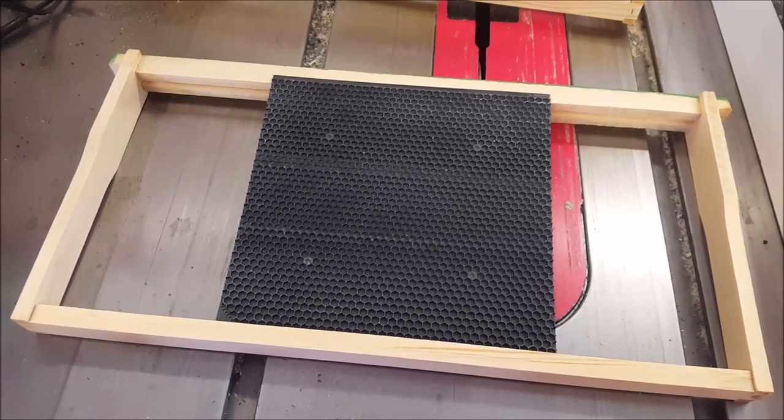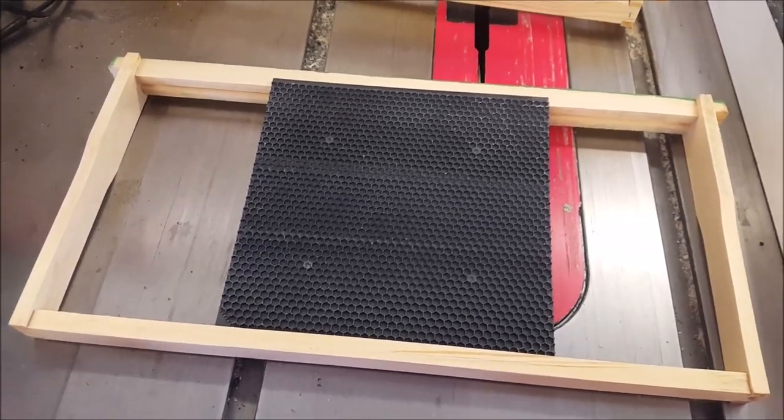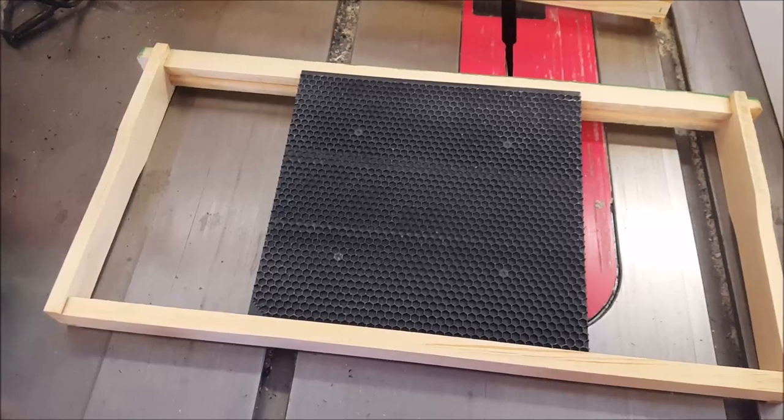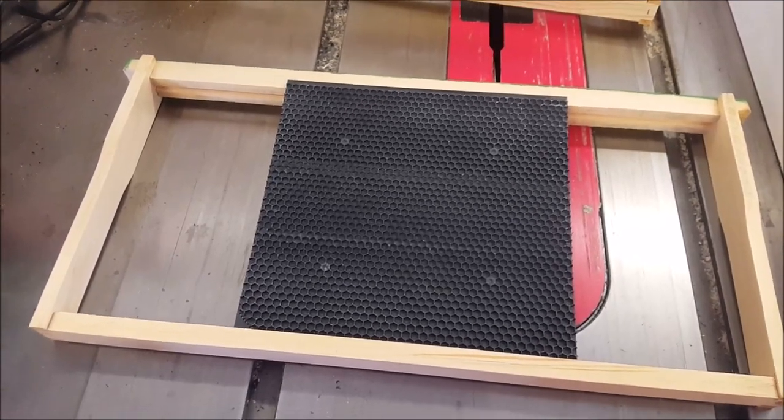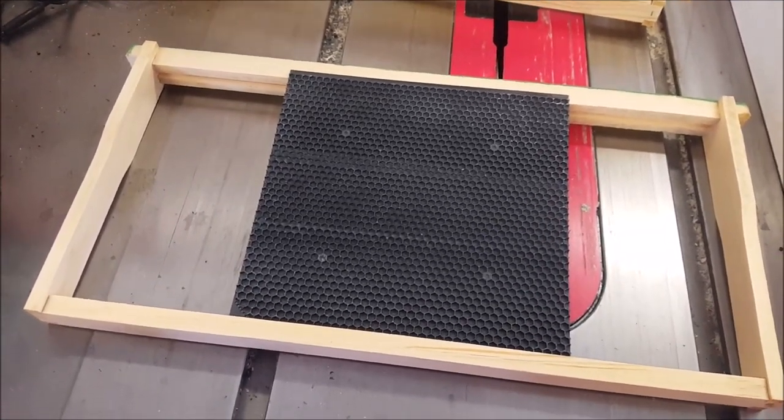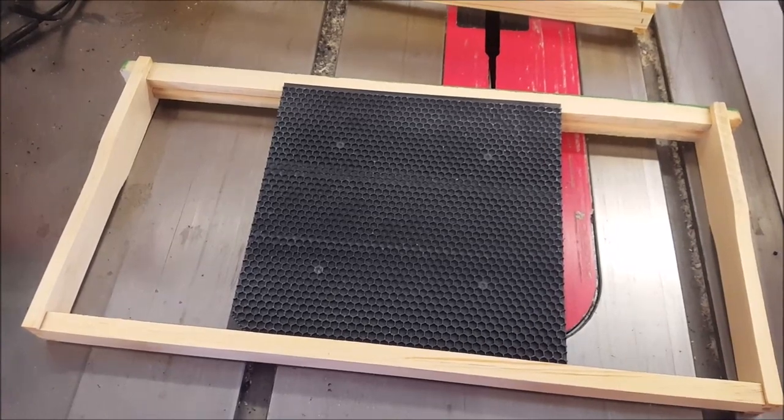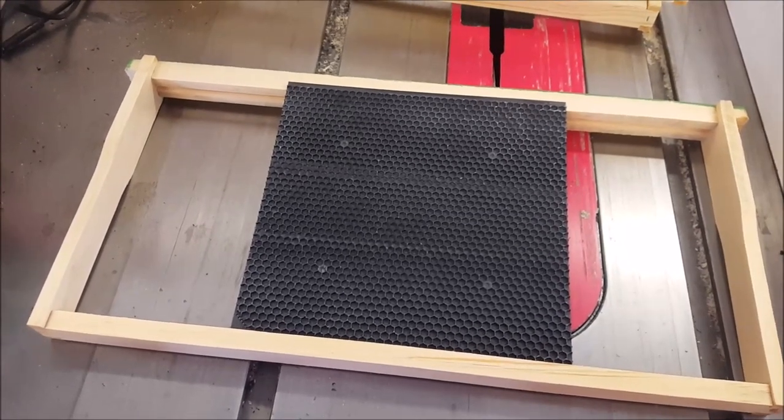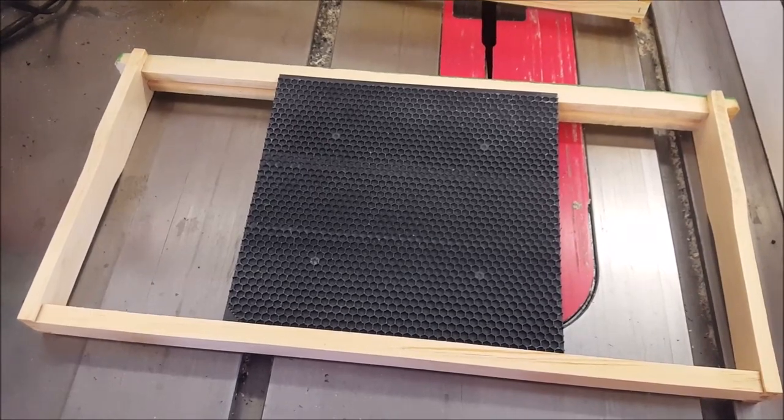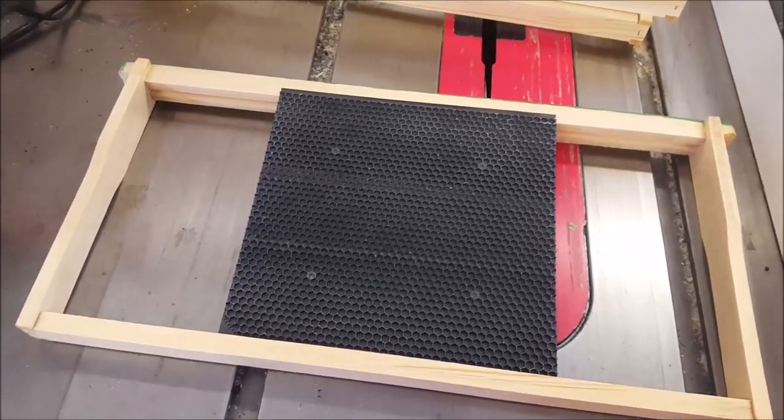Are they building drone comb? Are they building worker comb? Is she laying drones in there? Is she not? Are they filling it with honey? So you can see a lot of the details of where your colony is at by what this frame looks like.